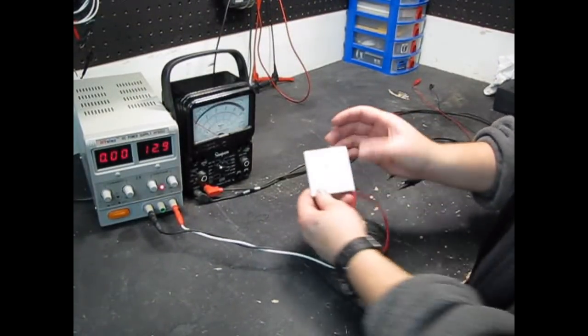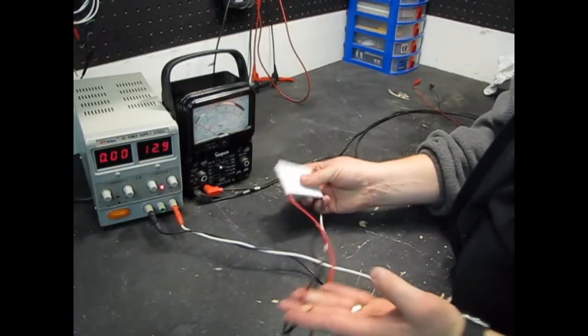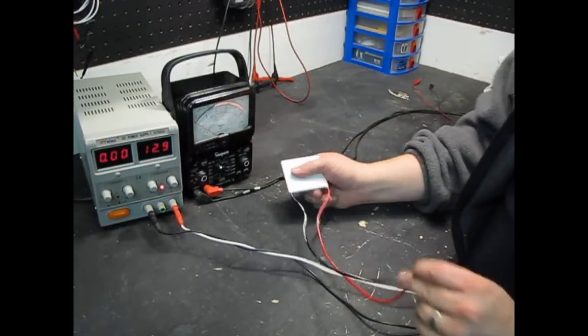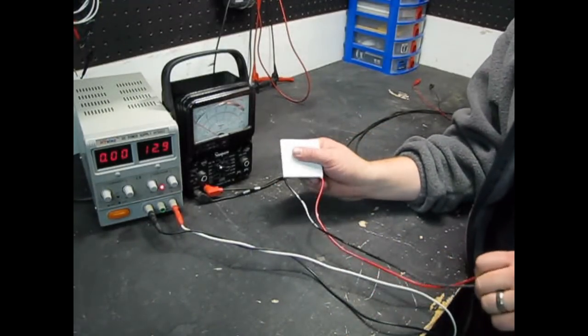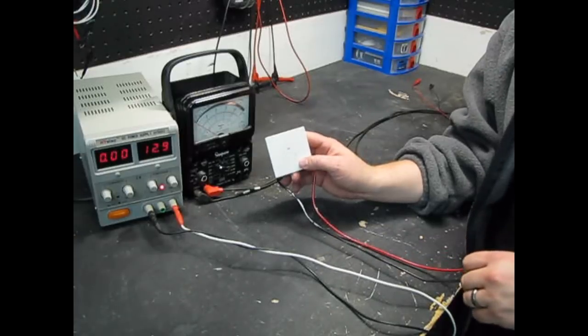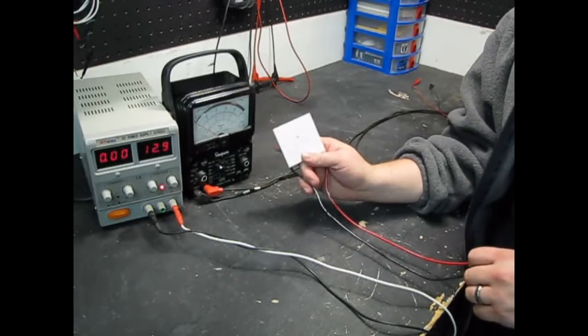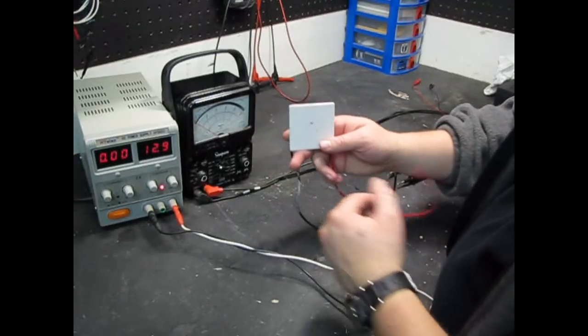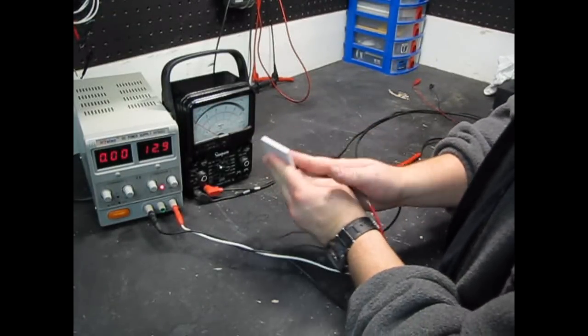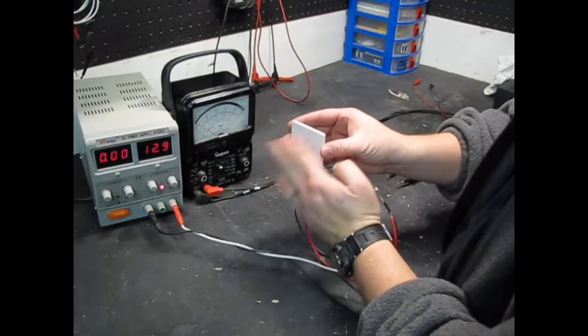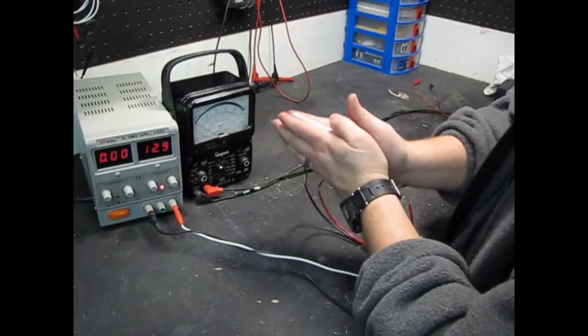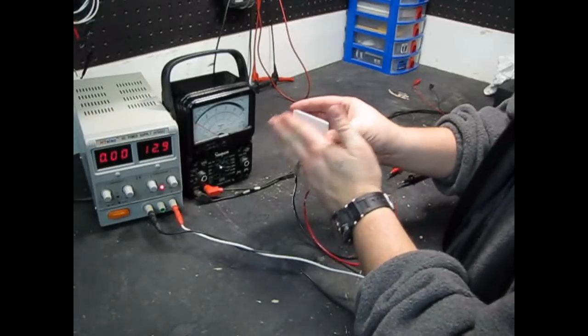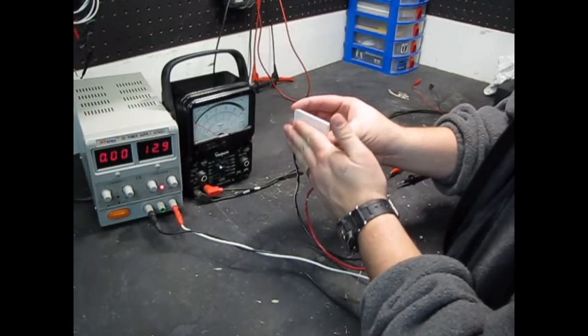So I got my Peltier cooler in the mail today. If you don't know, a Peltier cooler is used in little portable refrigerators that you can plug into a 12 volt outlet in your car. Basically you just put current in, one side will get hot and one side will get cold. So if you were cooling, you'd put the heat sink on the hot side and then your fridge would get the cool side.